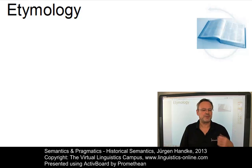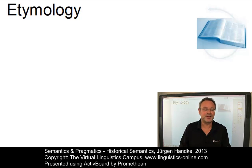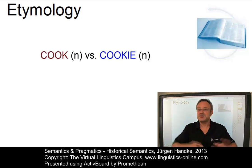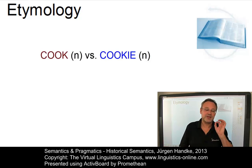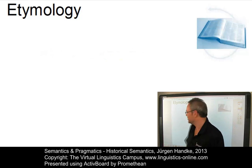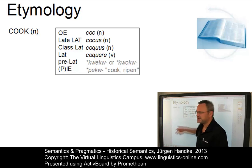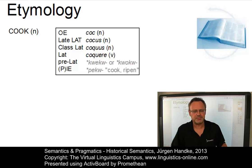The etymologies of apparently related words may turn out to be different, whereas seemingly unrelated words may come from a common ancestor. Let's look at two items: the present-day English word 'cook' and the present-day English word 'cookie'. These two words look as if they were related, but from an etymological point of view, one has nothing to do with the other. By the way, 'cook' can be used as a noun or as a verb in present-day English. The noun is someone who cooks.